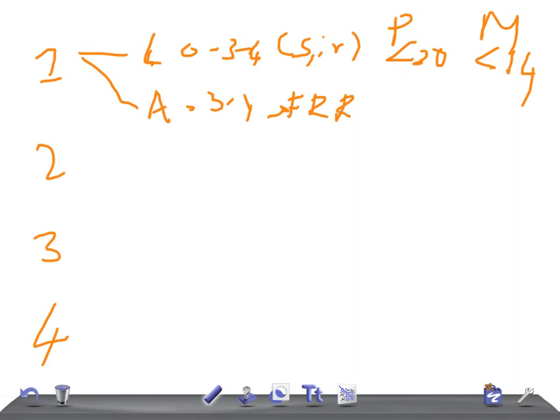In a primigravida, the active phase is more than 1 cm of dilation per hour. Whereas in multigravida it's 1.2 cm per hour dilatation. This means in a multigravida they will have more rapid dilation.